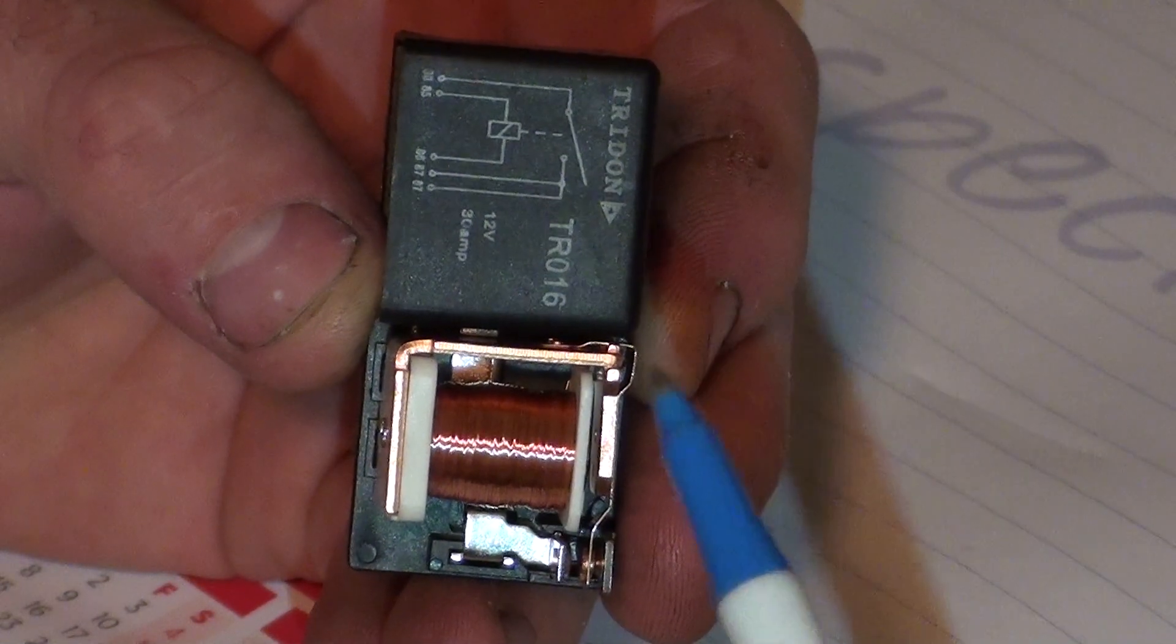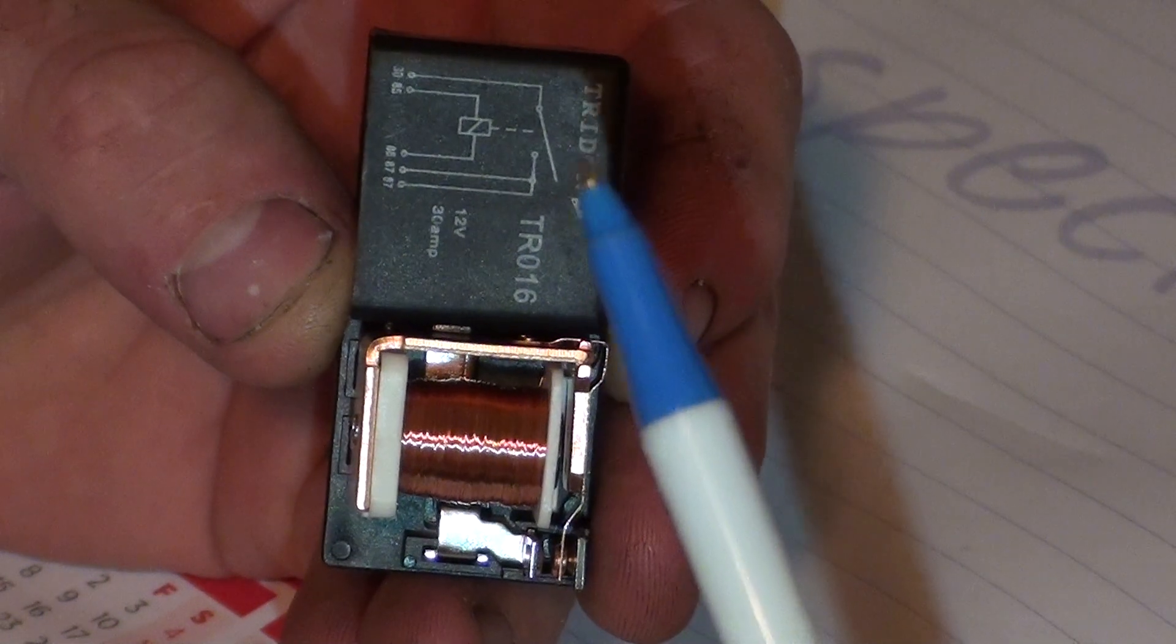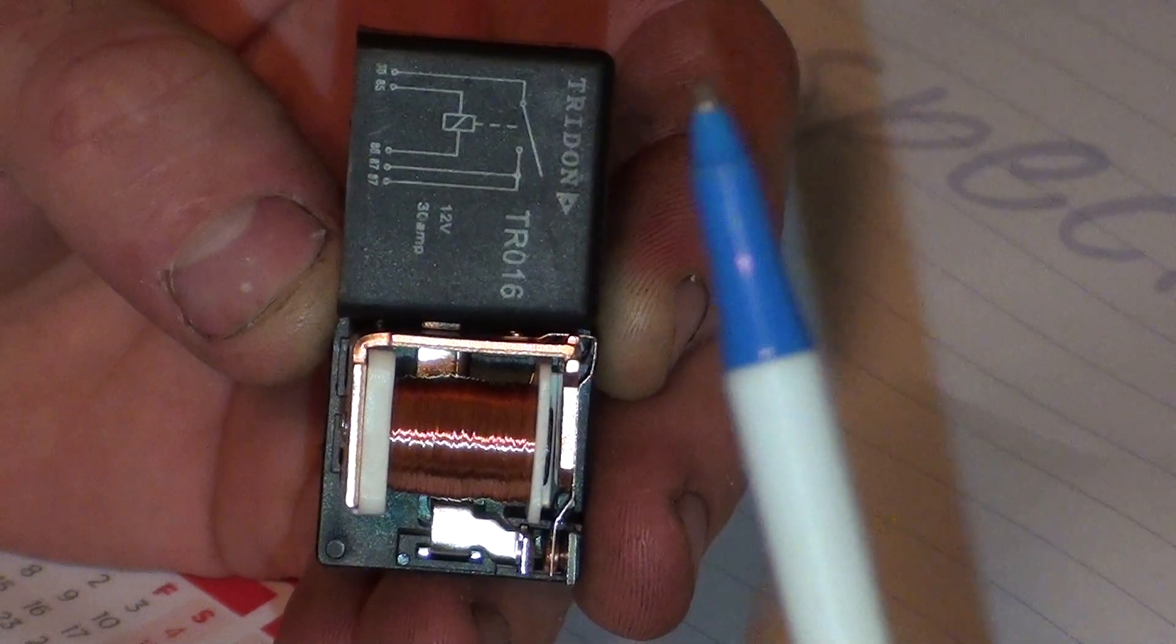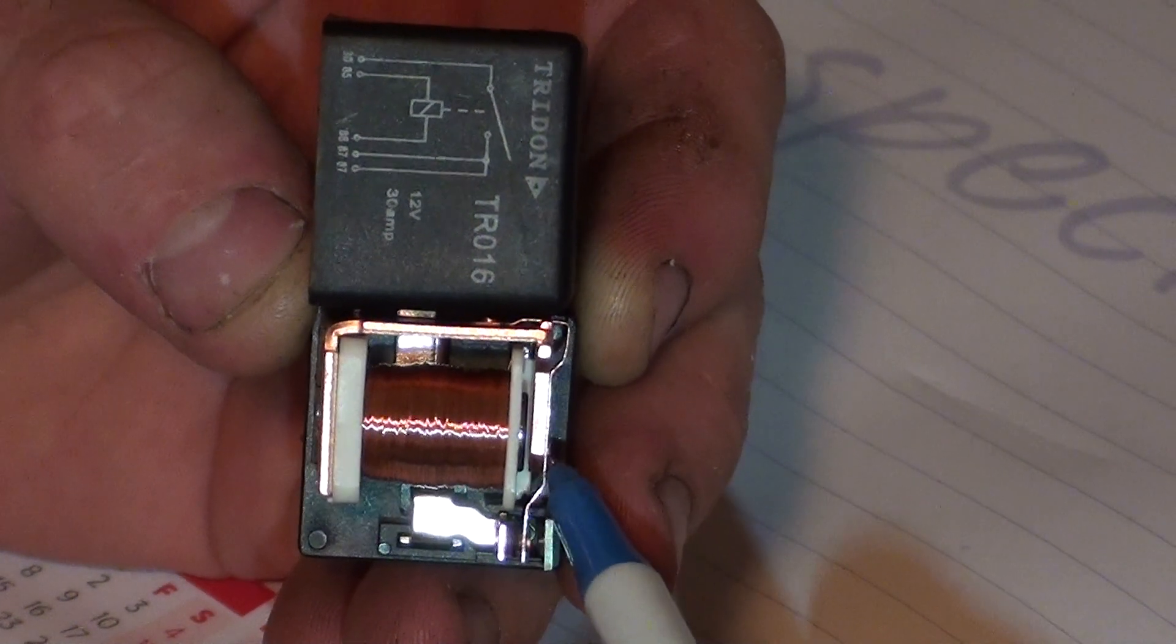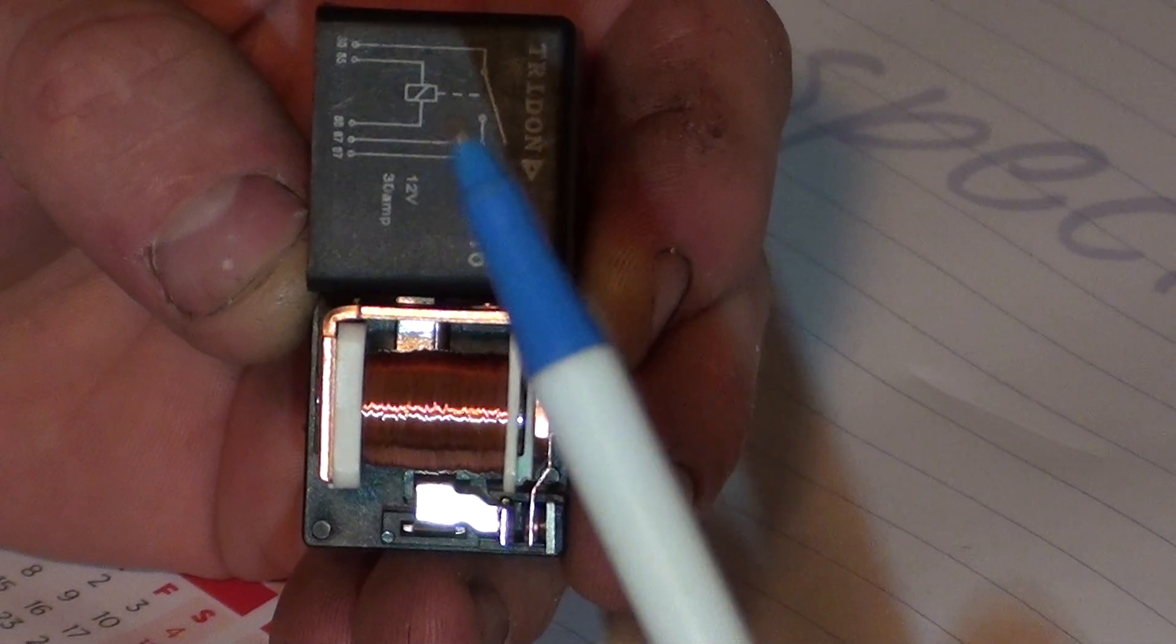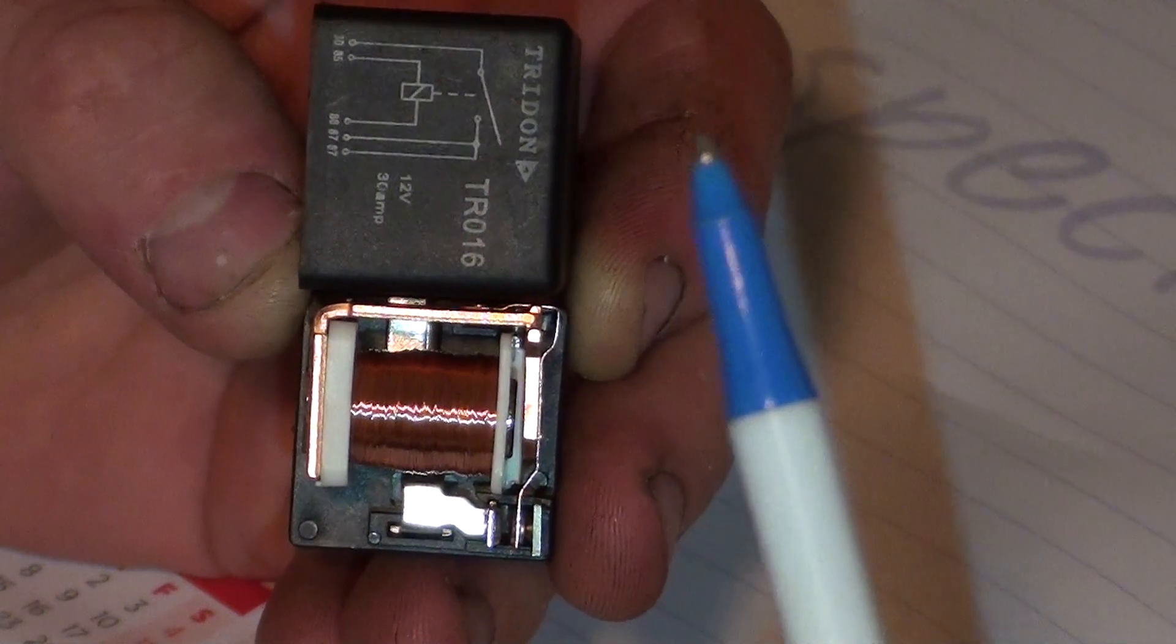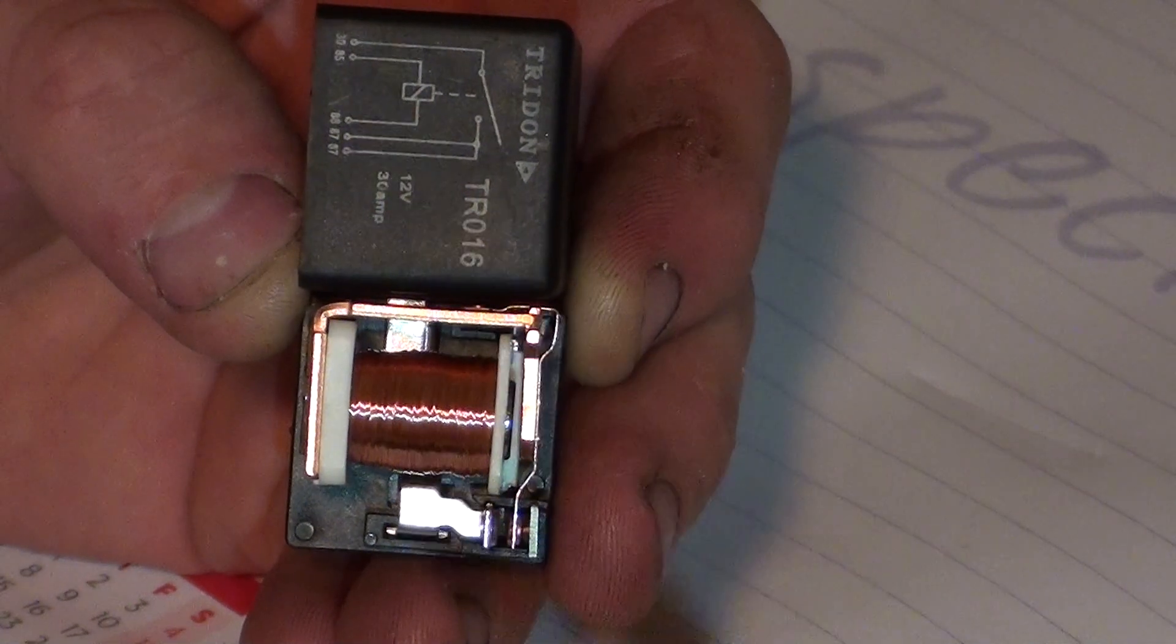So if you take the cap of the relay off, and hold it in the right position, you can basically get the diagram for the internals of the relay. So you can see here the switch, down on the relay, there's the switch. You can see the electromagnet there, you can see the electromagnet here in the relay. And then the terminals will go off different posts down here to the bottom side of the relay.